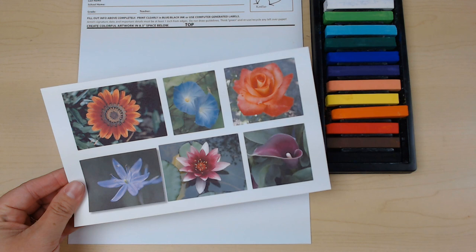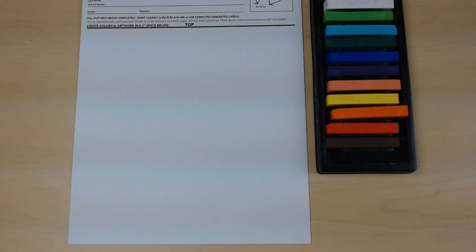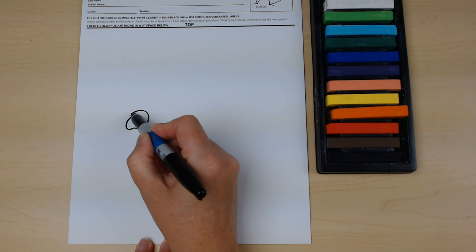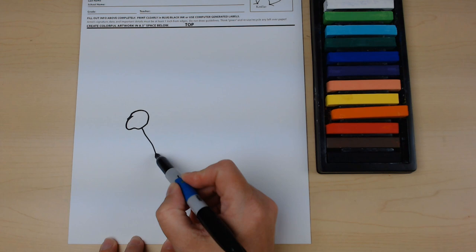Georgia O'Keeffe was known for drawing her flowers big and kind of going off the edge of the page, filling her space. So today we're going to do that. I'm just going to draw a simple flower. I'm just going to draw a little bit of a shape here for the center of my flower. And then I'm going to make sure that it goes all the way off the edge of the paper.